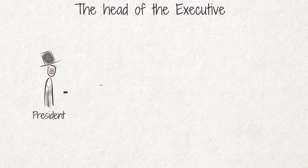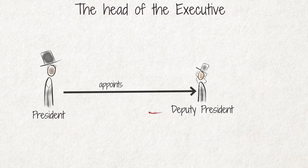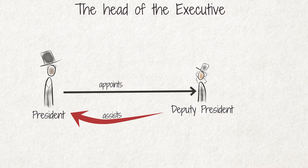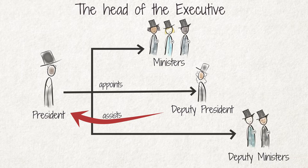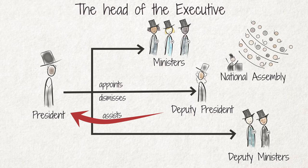The president appoints a deputy president, who assists the president in the duties as head of government and head of state. The president further appoints his or her ministers and deputy ministers, decides what each one's powers and functions are, and may dismiss them at his or her discretion. The president chooses his or her cabinet from the members of the National Assembly, but may select no more than two ministers from outside the assembly.